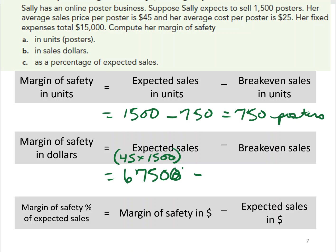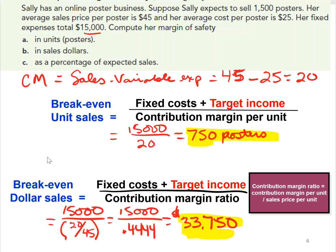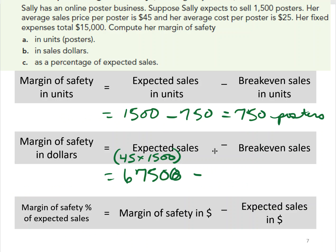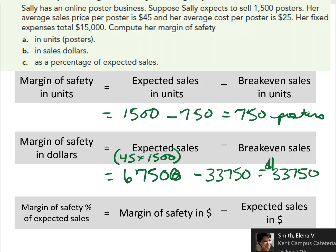Subtracting break-even sales of $33,750 from expected sales of $67,500 gives us a margin of safety in dollars of $33,750.